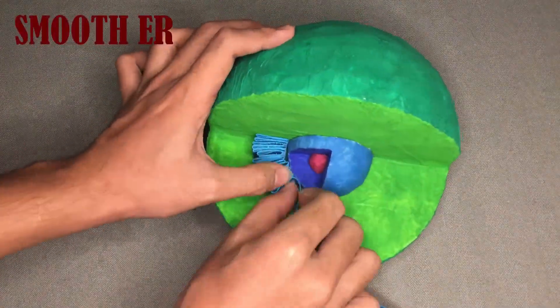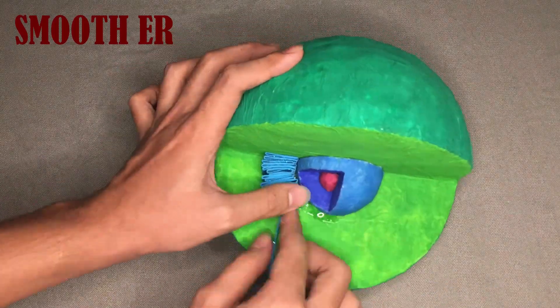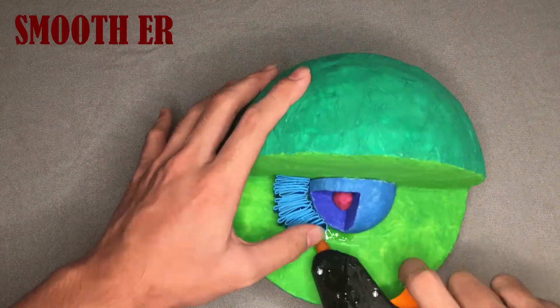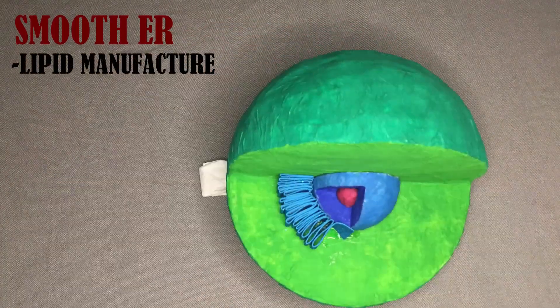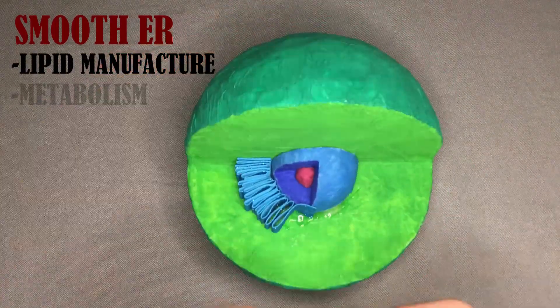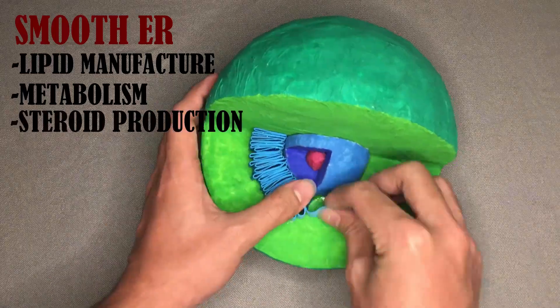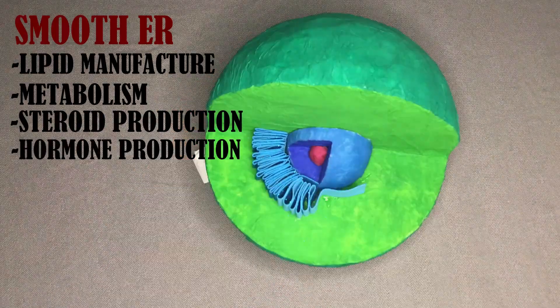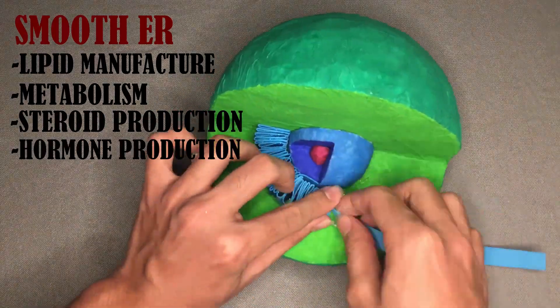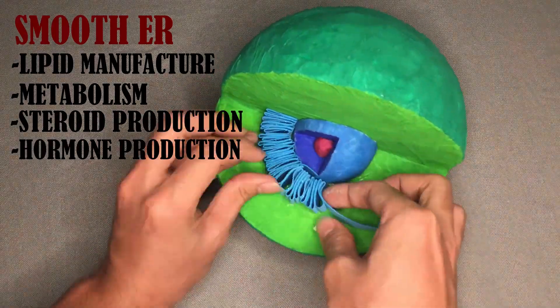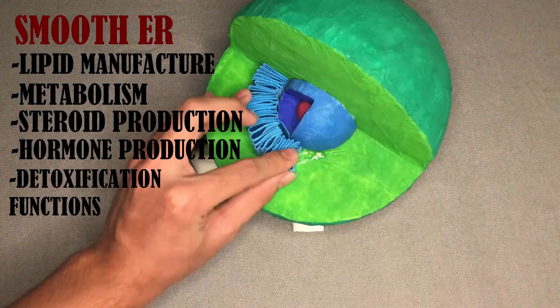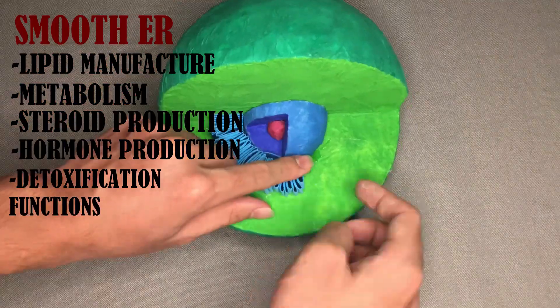The smooth endoplasmic reticulum is associated with lipid manufacture, metabolism, steroid production, and hormone production. It also has detoxification functions.